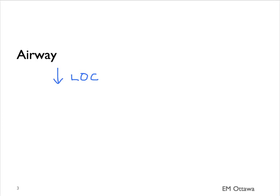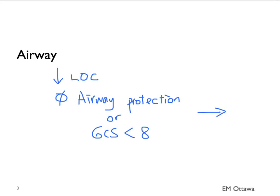As with all patients, we start with ABC. First, airway. Patients with intracranial bleed may present with decreased level of consciousness. If the patient is not protecting their airway, or if their GCS is low, we need to intubate the patient. This will be done by rapid sequence induction. The choice of medication should be discussed with your attending physician.